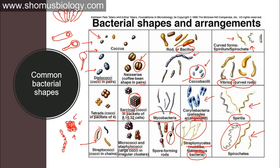Streptomycetes look like mold under a microscope — a mesh or network of fiber-like, thin, transparent structures. However, streptomycetes are a bacterial type, not fungi, though they appear fungi-like. These are the very common shapes and arrangements of bacteria: diplococci, Neisseria, streptococci, staphylococci, vibrio, spirilla, spirochetes, corynebacteria, mycobacteria, and streptomycetes.